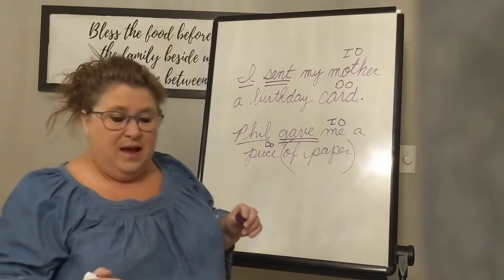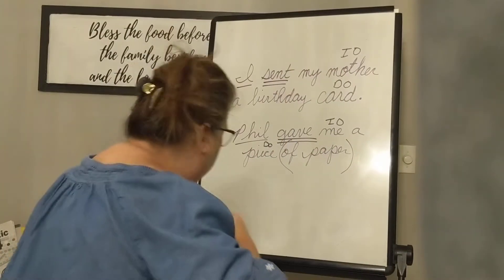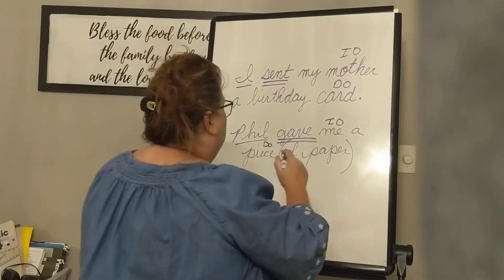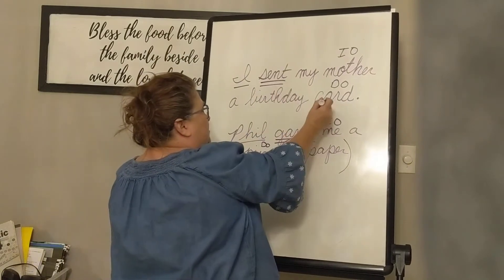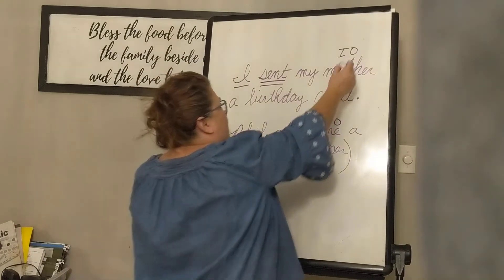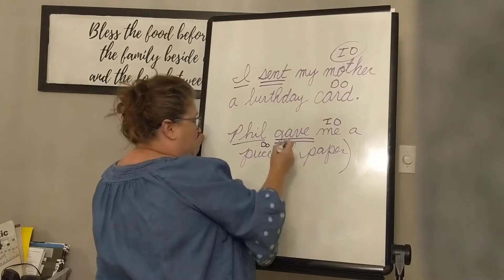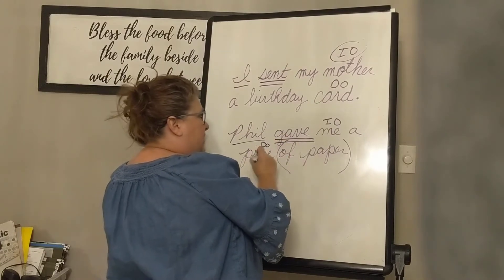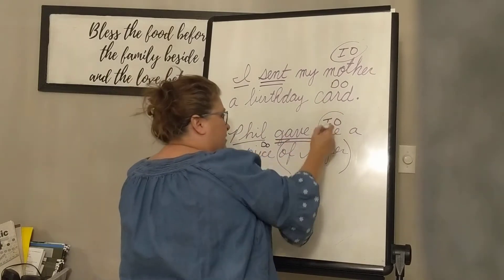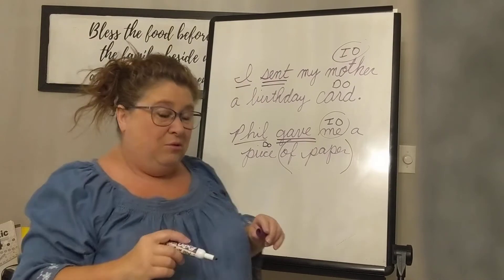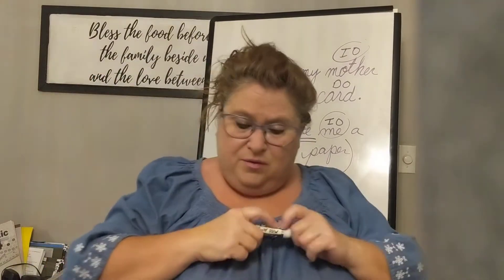So that is how we find our indirect objects. And I wanted you to note — here's our verb, here's our direct object, and our indirect object is in the middle of them. Here's our verb, here's our direct object, our indirect object is in the middle. So that'll help you find them as well.